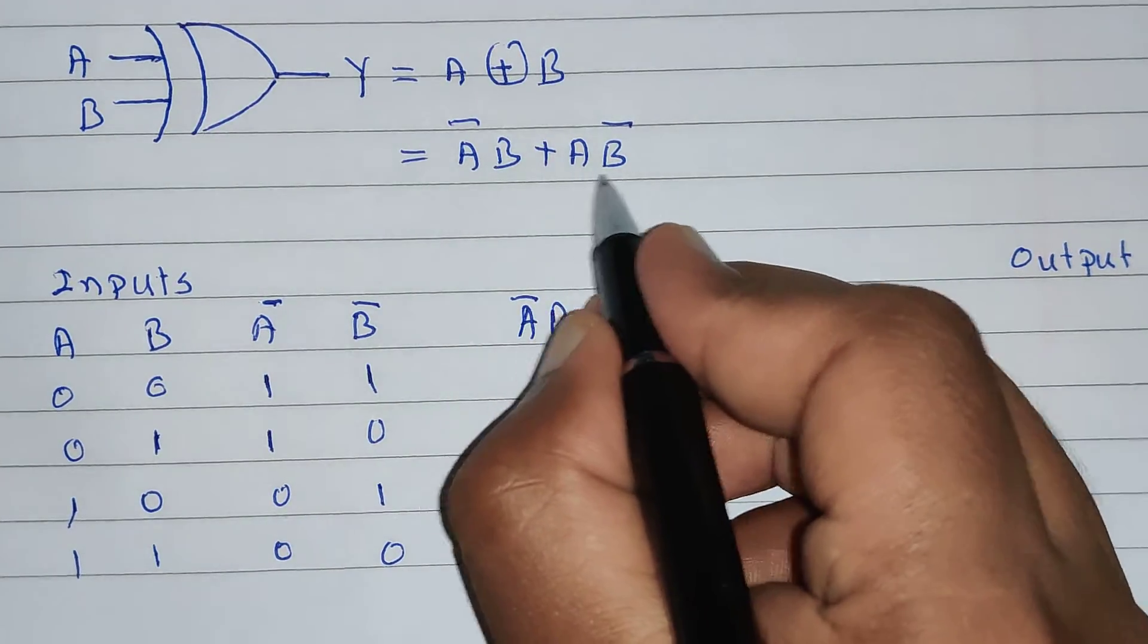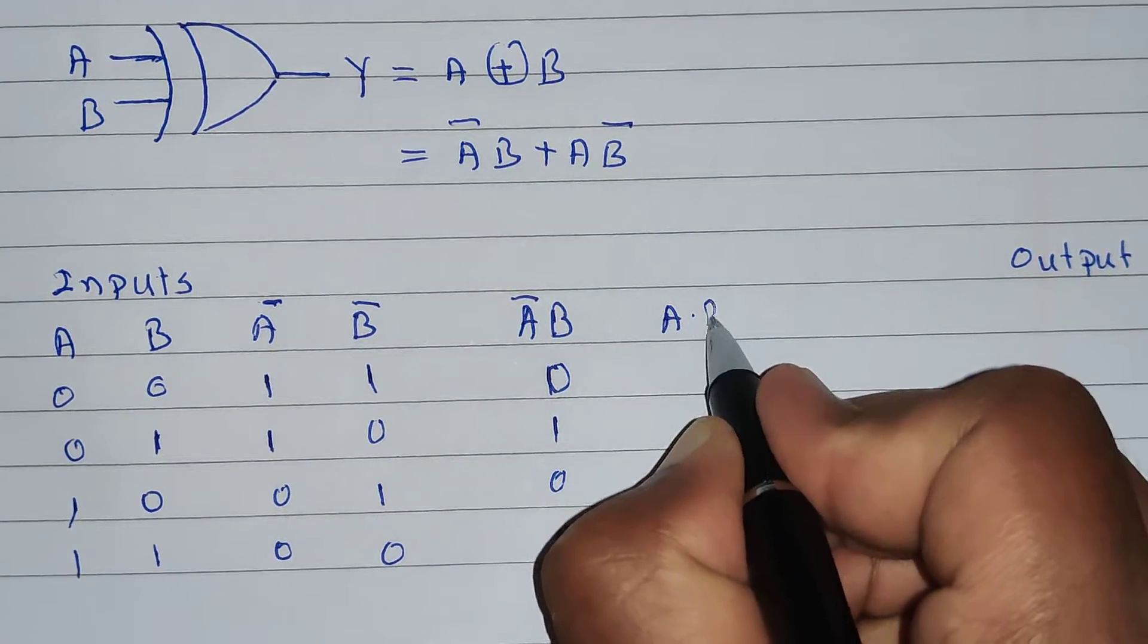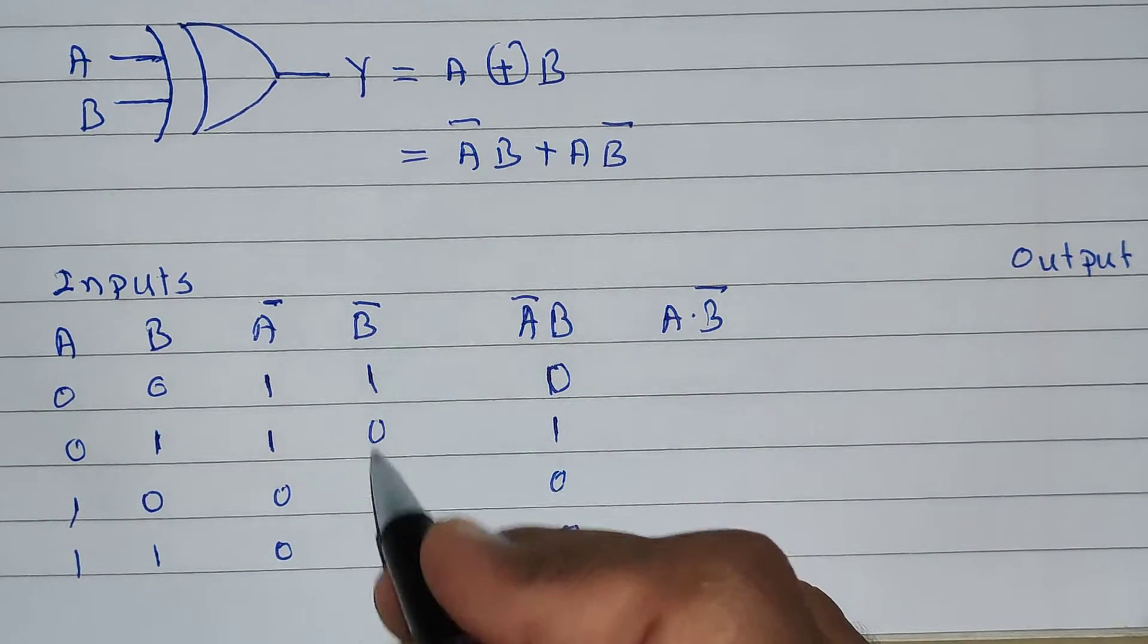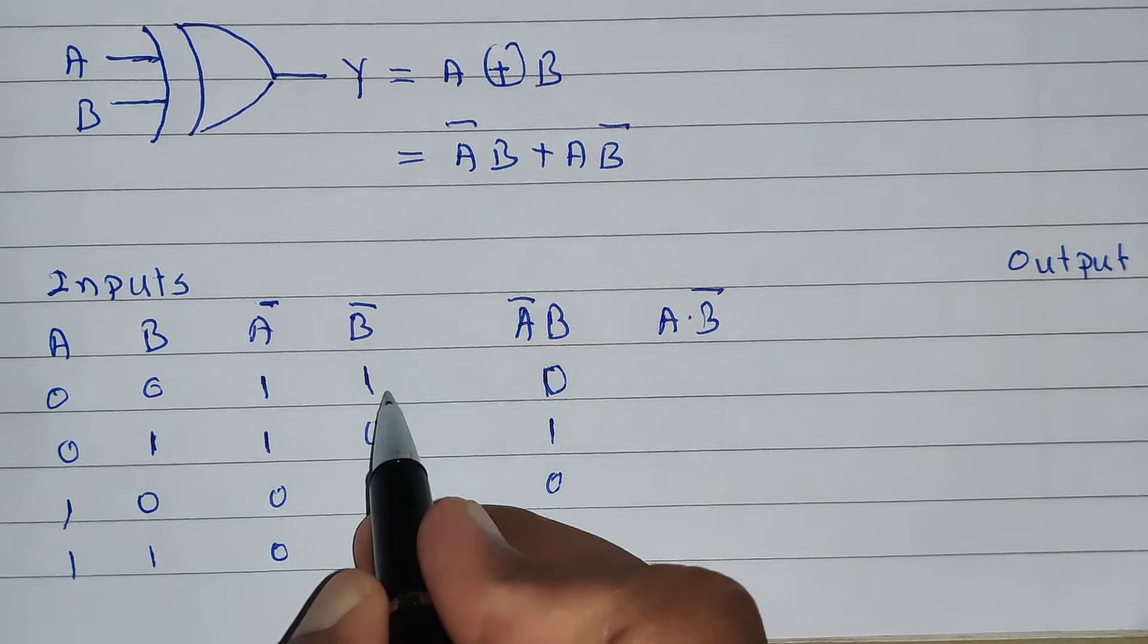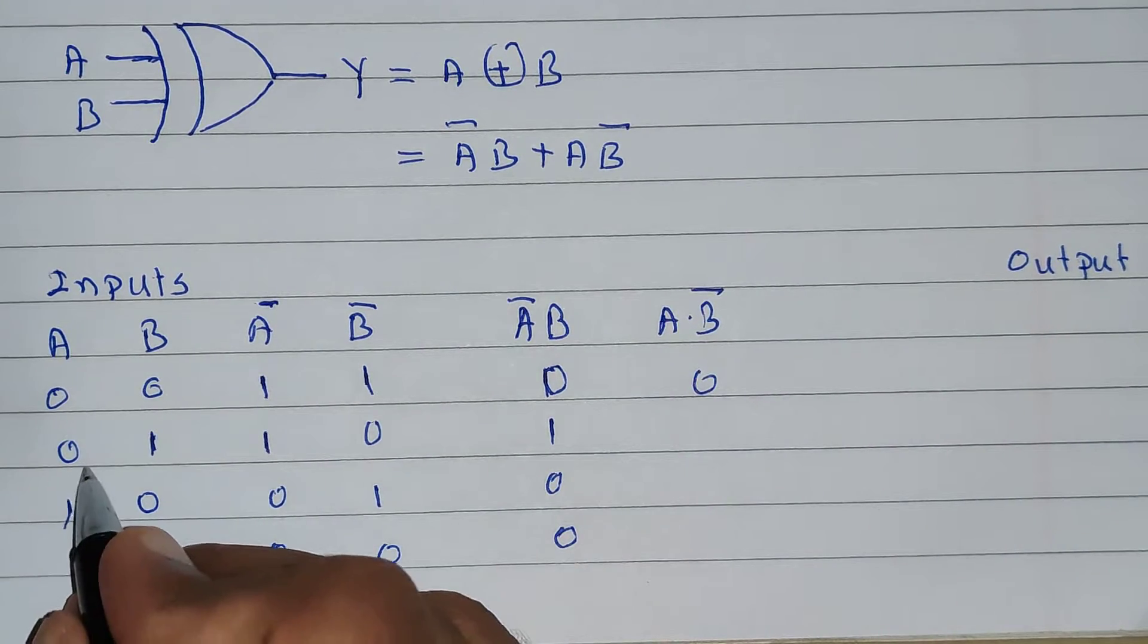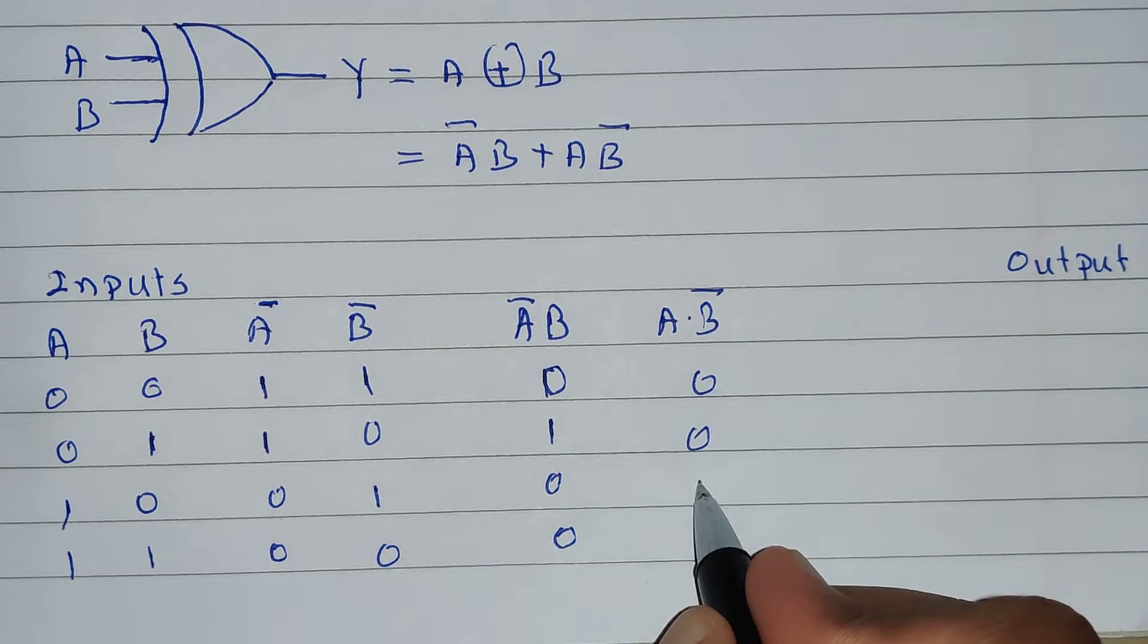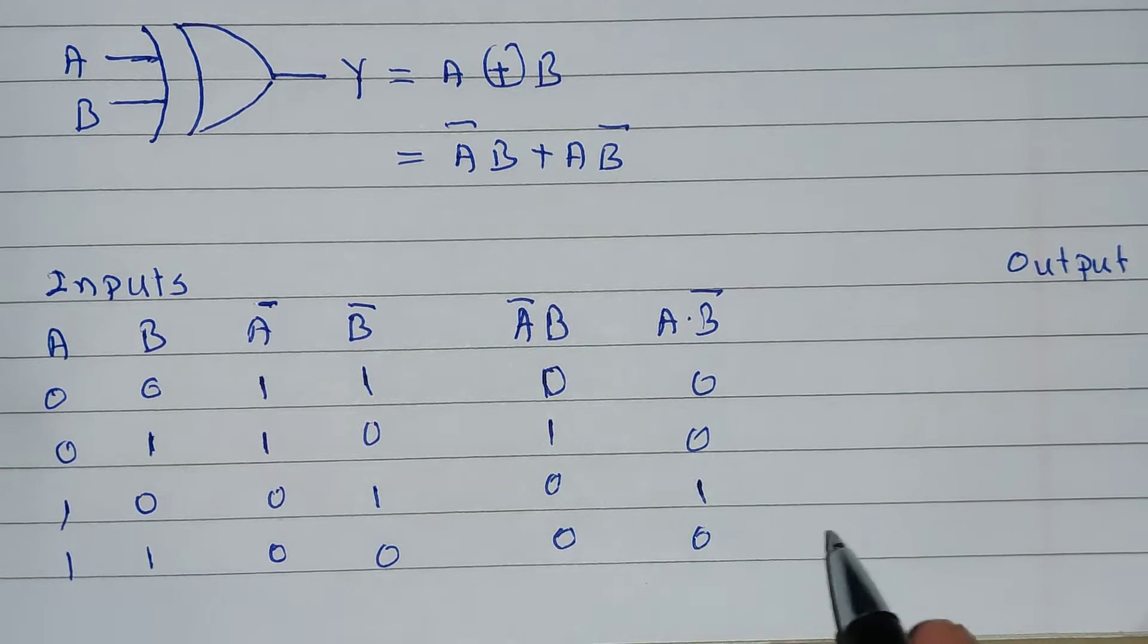Now, we will require the second term, which is A dot B bar. A dot B bar means multiplication of this column and this column. 0 into 1 is 0, 0 into 0 is 0, 1 into 1 is 1, and 1 into 0 is 0.